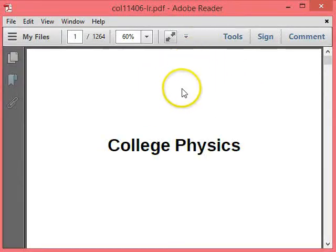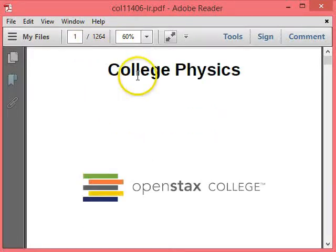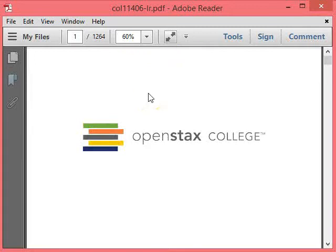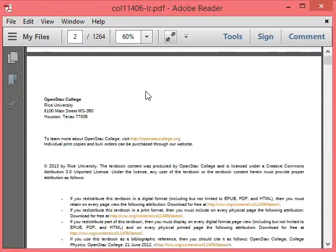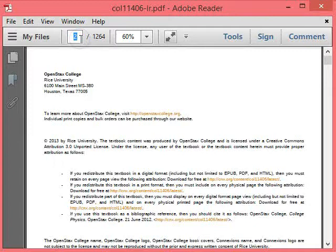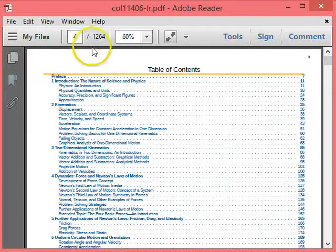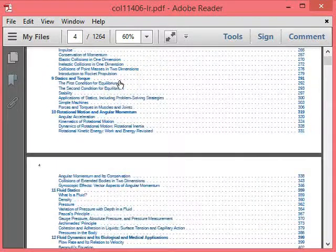So, this is Adobe Reader, showing the PDF that you downloaded. It's actually 1264 pages, scrolling down here. So be careful before you print it, just print a small range. If you go, for example, to page 4, you'll see the table of contents showing all the chapters.